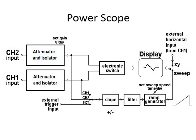A normal oscilloscope has two input terminals: main and ground, where the ground terminal is always at zero potential. The power scope is used to observe waveforms of a signal in any branch of a circuit, even if none of the terminals of that branch are connected to ground. It is also used for high voltage circuits to observe high amplitude waveforms. The power scope is similar to a normal oscilloscope except in its input circuit, which consists of an attenuator and isolator.